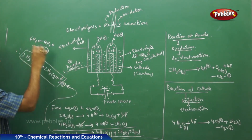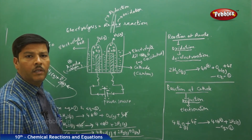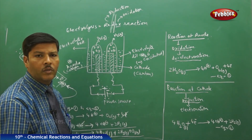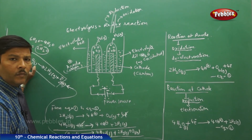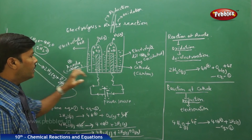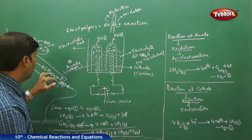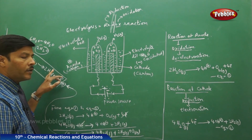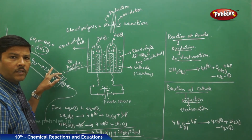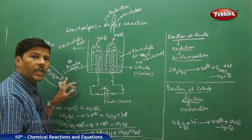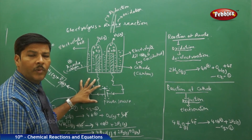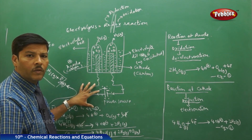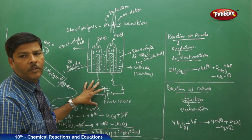This is the final equation for the electrolysis of acidulated water. During the electrolysis of acidulated water using inert carbon rod electrodes, 2 moles of water produce 2 moles of hydrogen gas at the cathode and 1 mole of oxygen gas at the anode electrode. This completes the complete concept involved in the electrolysis of acidulated water, which is a very important topic for examination purposes.